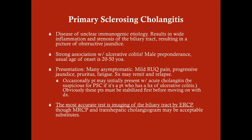The most accurate test is imaging of the biliary tract by ERCP. MRCP and transhepatic cholangiogram can also be done. ERCP is the gold standard because you can also get biopsies. The initial test you'll probably do in any patient with right upper quadrant pain, jaundice, and fatigue is a right upper quadrant ultrasound. But patients with a history of ulcerative colitis will definitely be getting ERCP if they have symptoms associated with biliary tract problems.